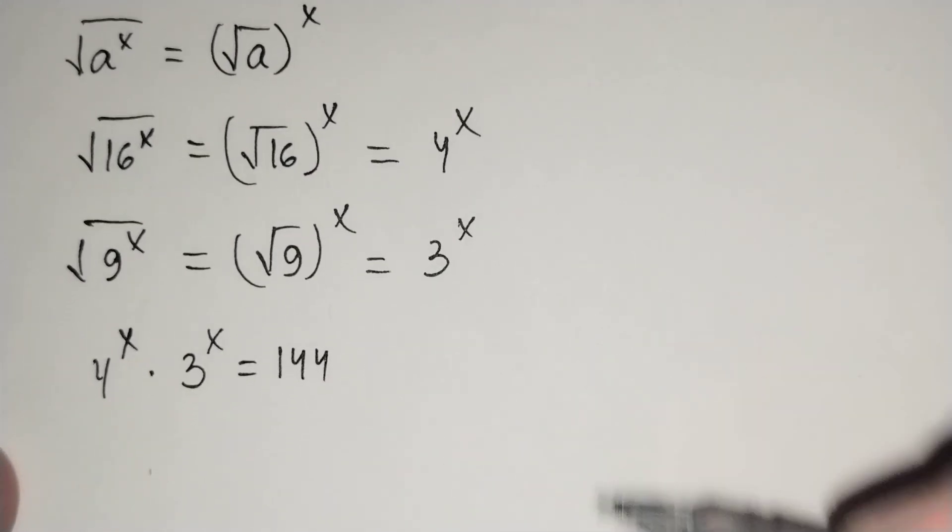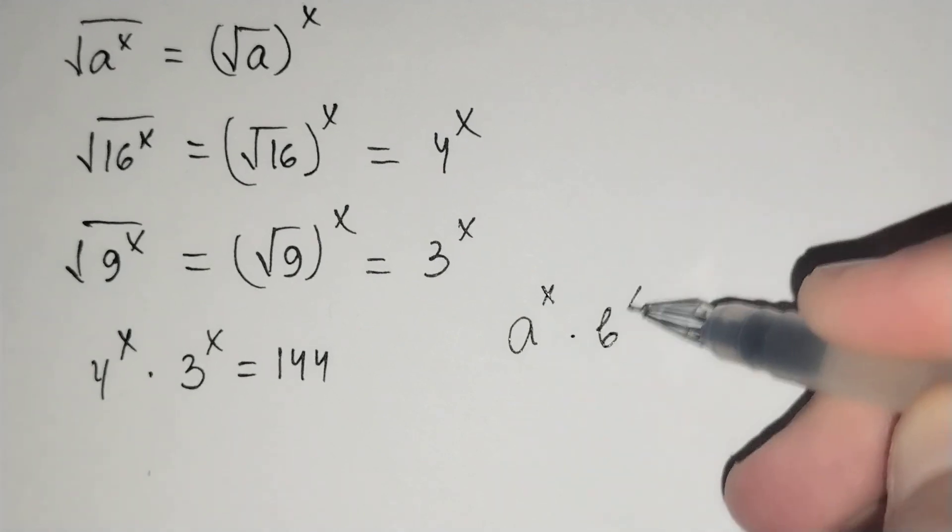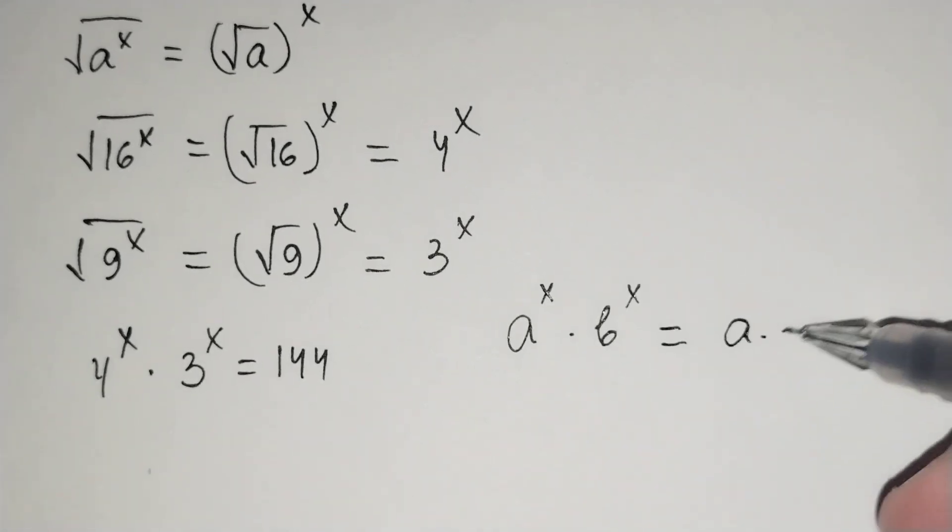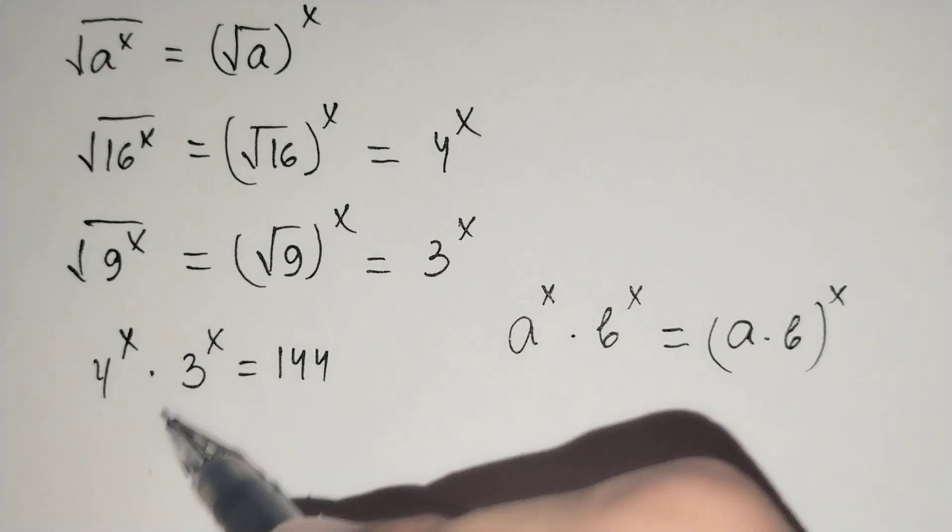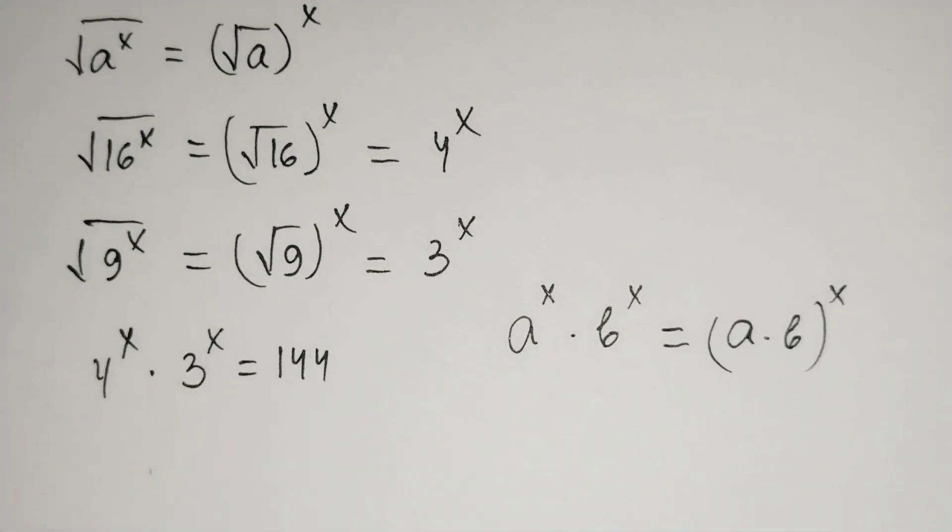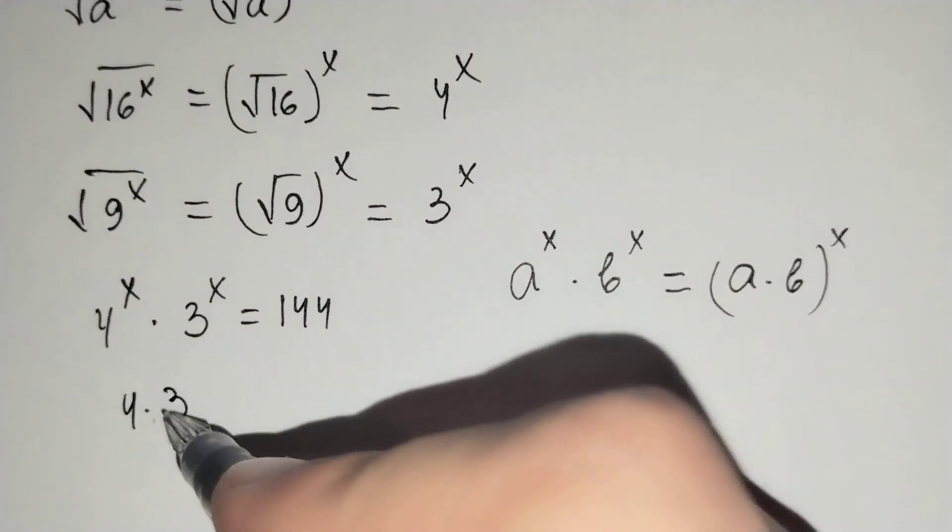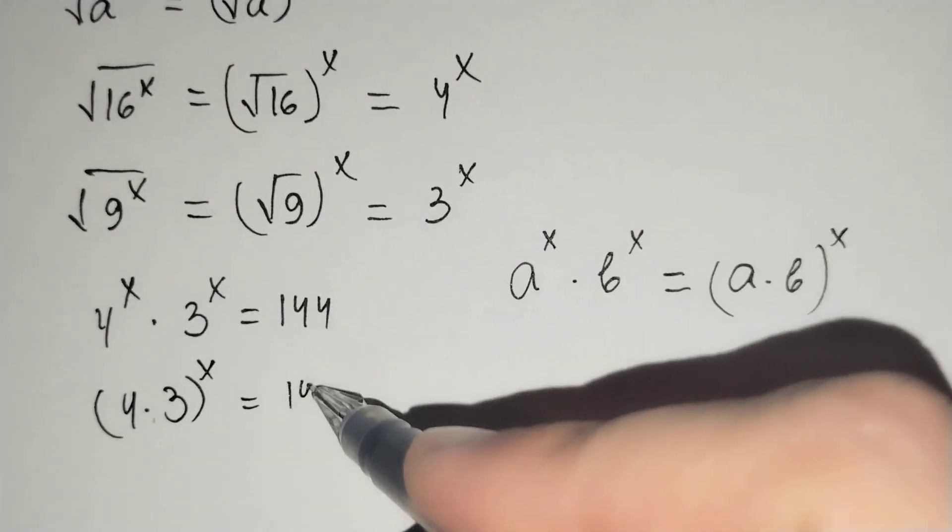Then, a power x times b power x equals to a times b power x. For this formula, the left side of our equation equals to 4 times 3 power x equals to 144.